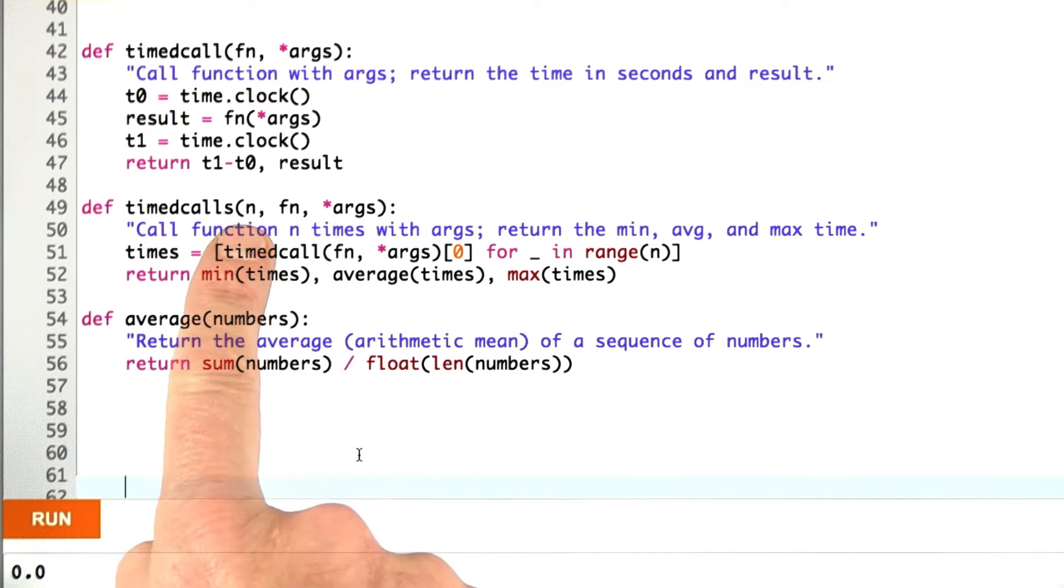It takes a number n saying repeat this timing n times, and then it takes the function and the arguments to apply to. It builds up a list of the timed calls, throws away the results and just takes the time.